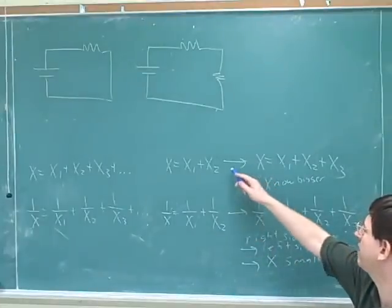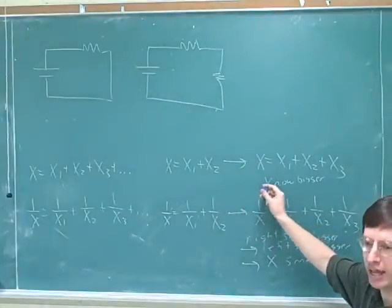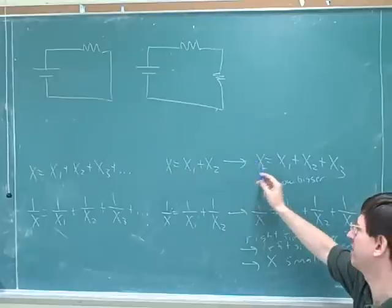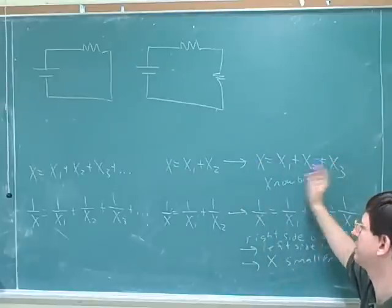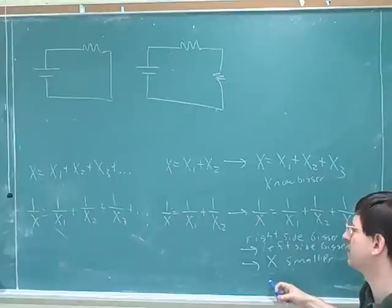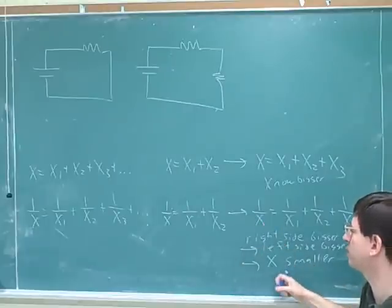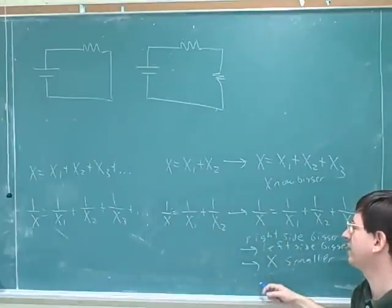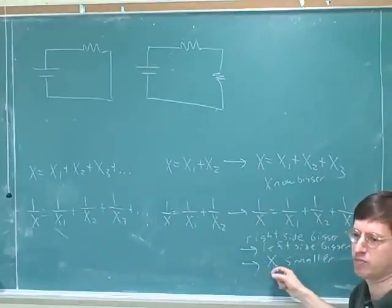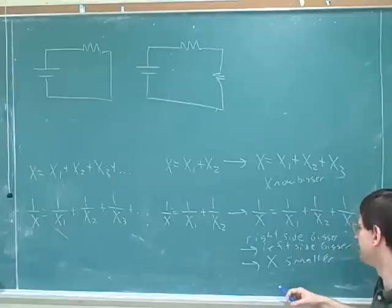Whereas when you add a new device to the sum equation, x gets bigger. It's pretty obvious in the sum formula. It's not nearly as obvious here, but for this reciprocal formula, adding a new device will make x smaller.